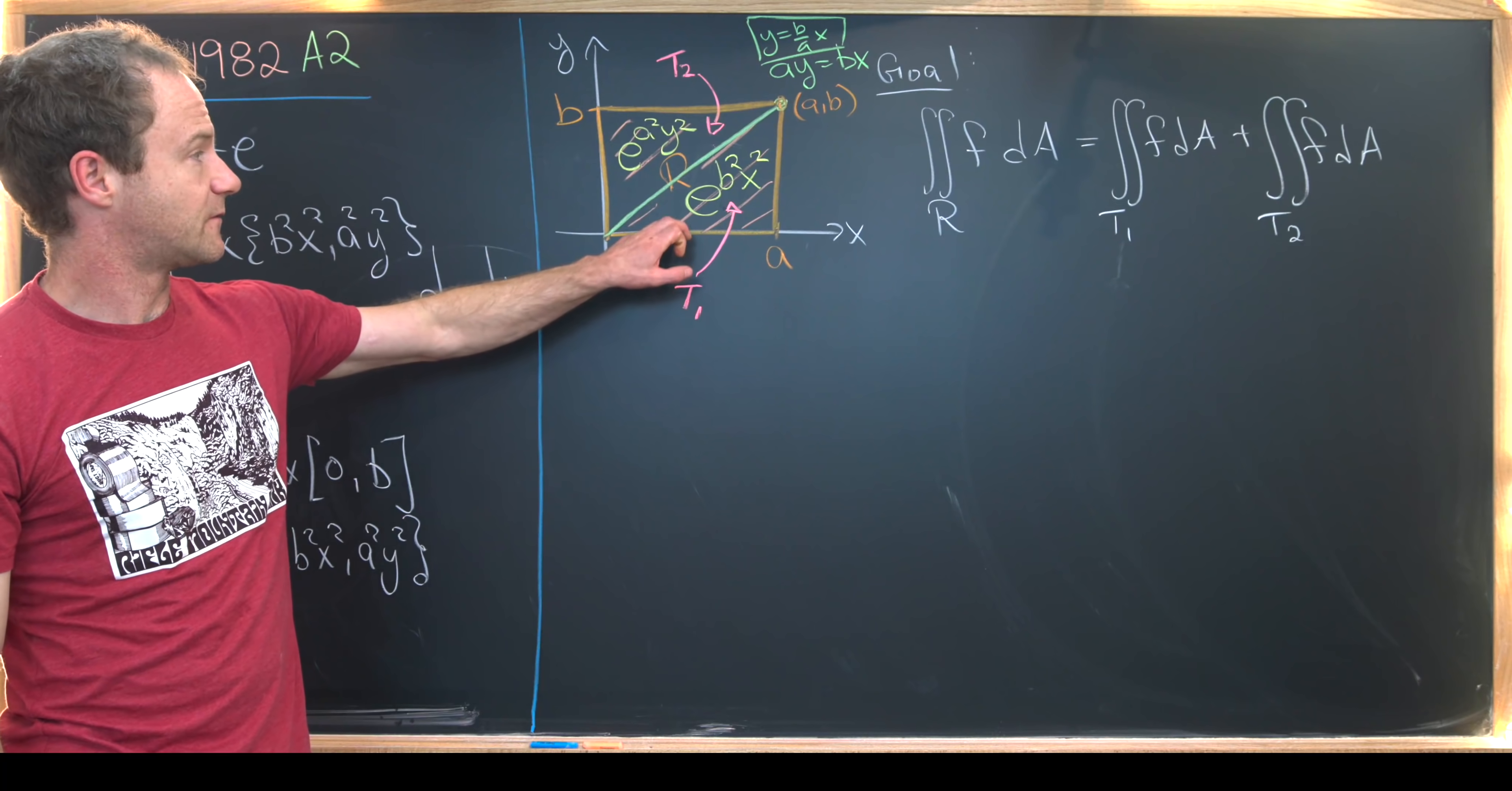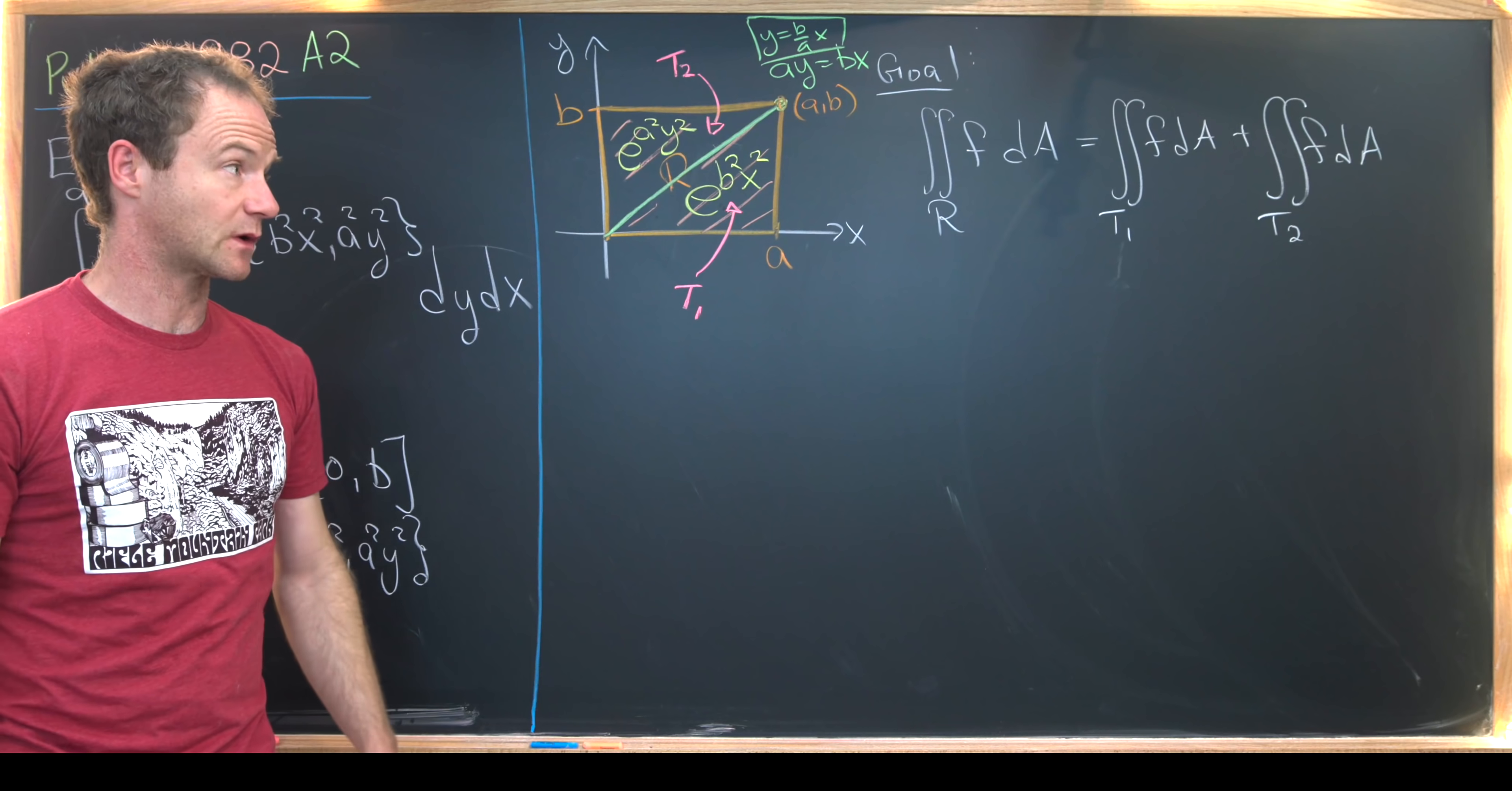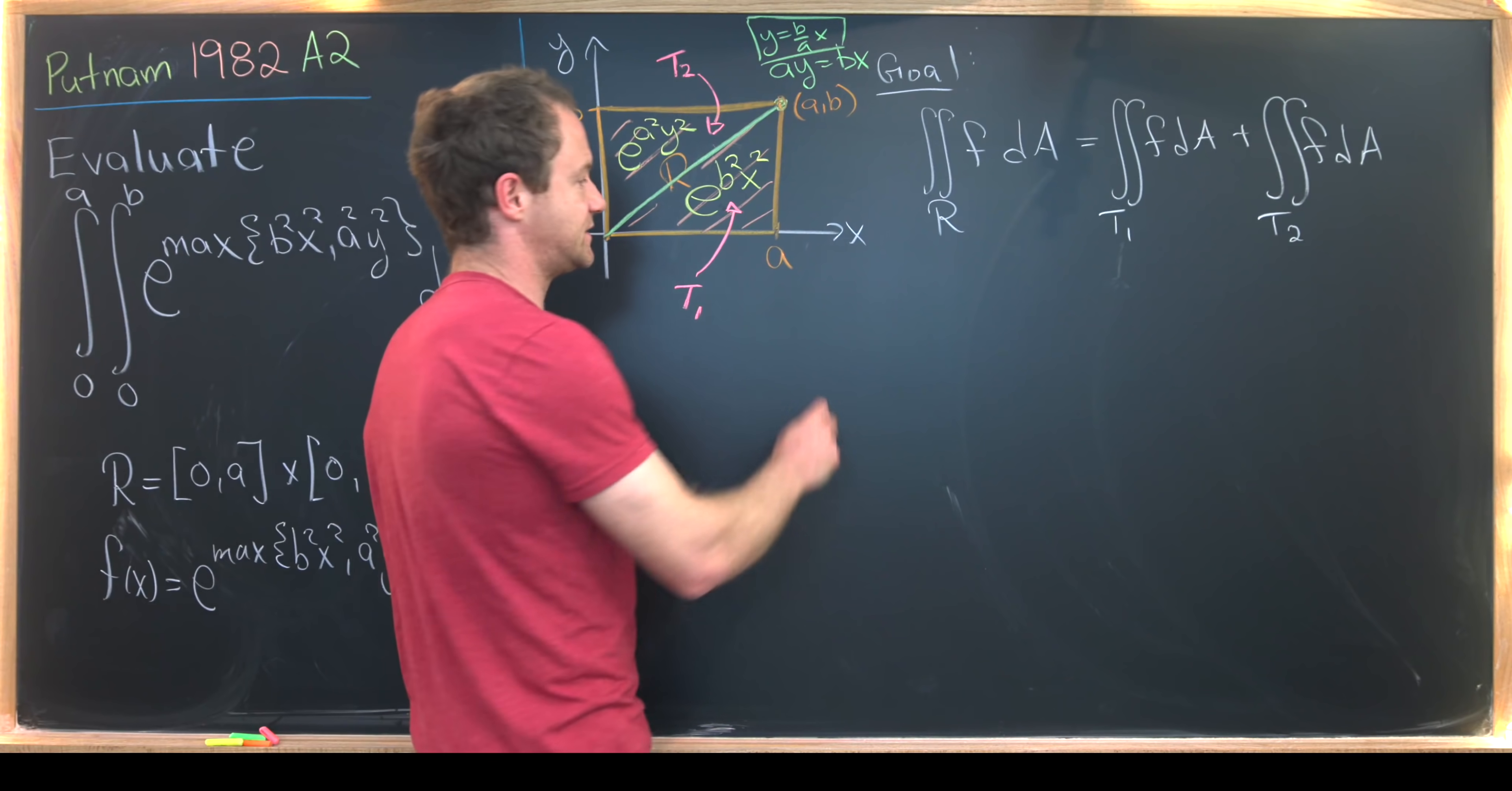But f takes on the form e to the b squared, x squared on triangle one, and e to the a squared y squared on triangle two. And then furthermore, we can change those into iterated integrals. So let's do that.